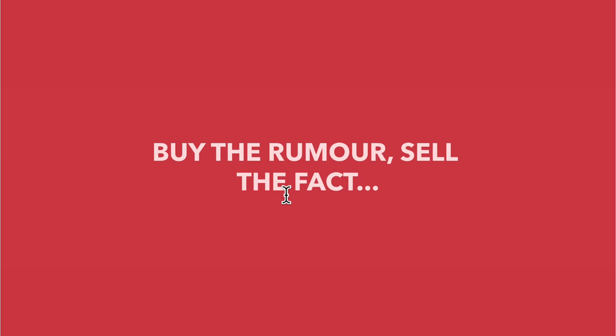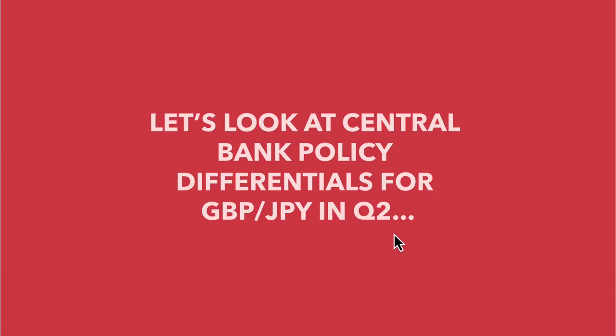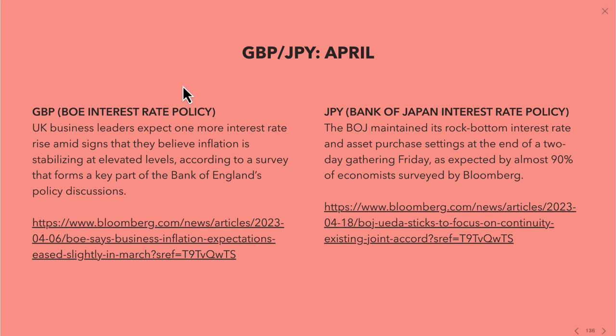To know whether a currency exchange rate, stock, or property investment is high or low, you need to understand the fundamentals first to get a valuation and anticipate what may be coming in the future. In currencies, we do that by anticipating what the central bank is likely to do with interest rates by watching inflation and GDP. So let's look at the central bank policy differentials for the pound/yen in Q2 2023 — April, May, and June — where we're looking for divergences.